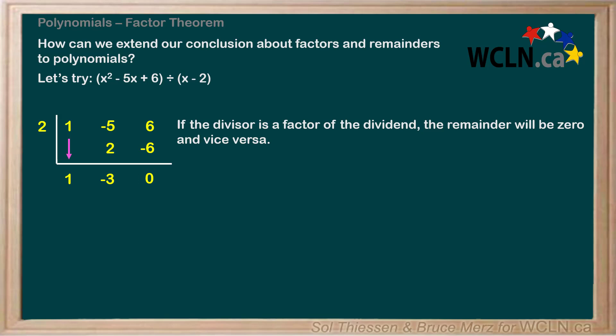This may seem unrelated, but trust me and try to evaluate the same dividend polynomial, x squared minus 5x plus 6, at x equals 2. Substituting 2 in for all the x's gives us 2 squared minus 5 times 2 plus 6. 2 squared is 4, and 5 times 2 is 10, so we have 4 minus 10 plus 6, which is equal to 0, the same as the remainder we found by performing synthetic division.